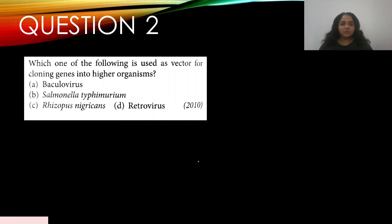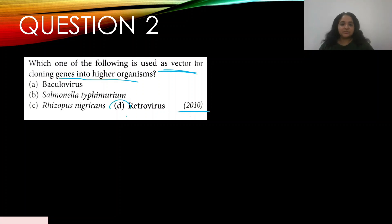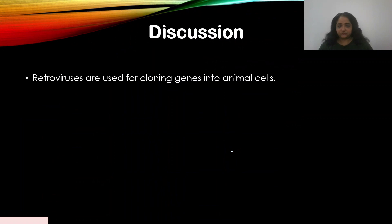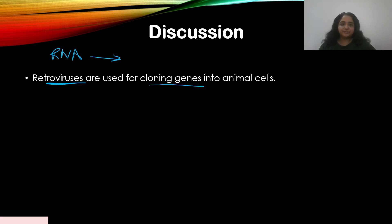Question 2: Which one of the following is used as a vector for cloning genes into higher organisms? This appeared in 2010. The options are: A — baculovirus, B — Salmonella typhimurium, C — Rhizobius, and D — retrovirus. The answer is D — retrovirus is used as a vector. Retroviruses are used for cloning genes into animal cells. They have RNA as genetic material, which is converted to DNA via the enzyme reverse transcriptase.